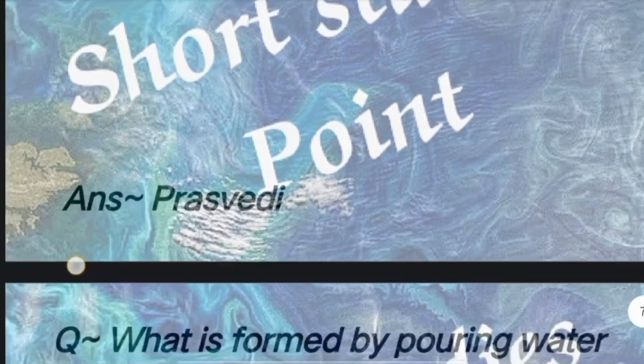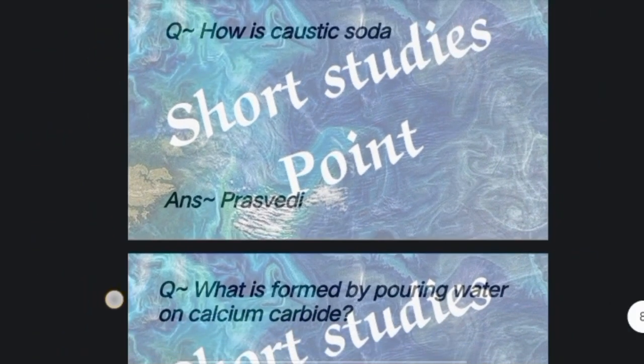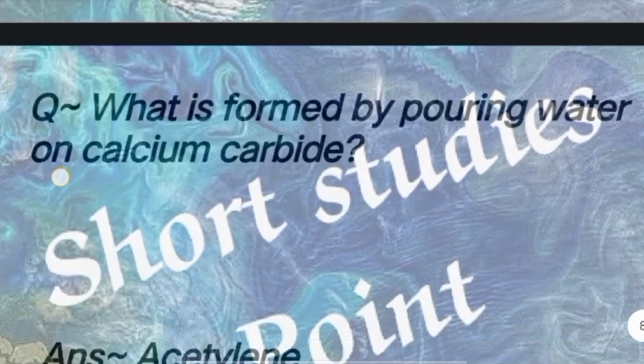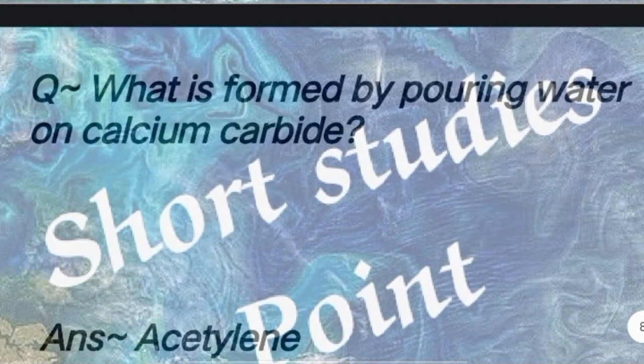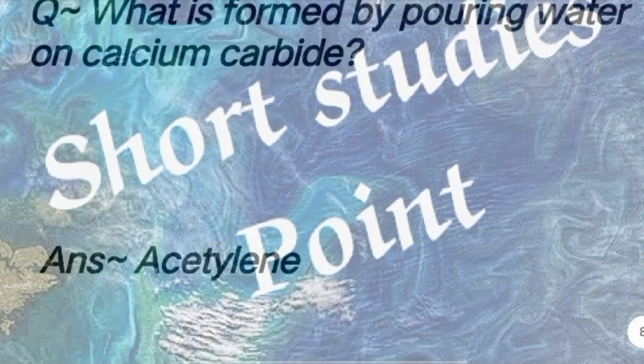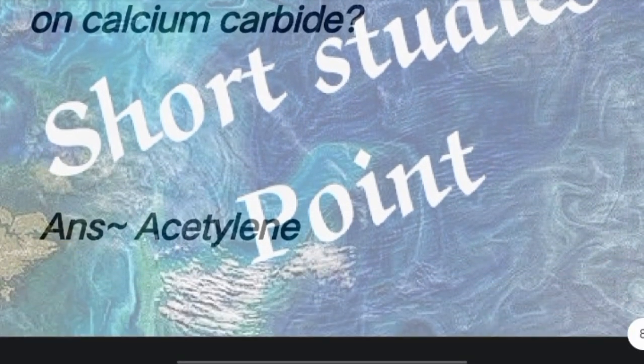How is caustic soda? Answer: It is strongly basic. What is formed by pouring water on calcium carbide? Answer: Acetylene.